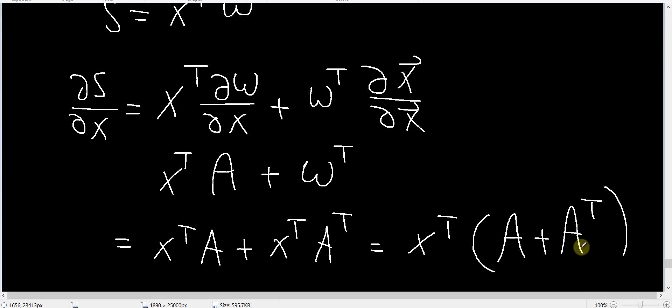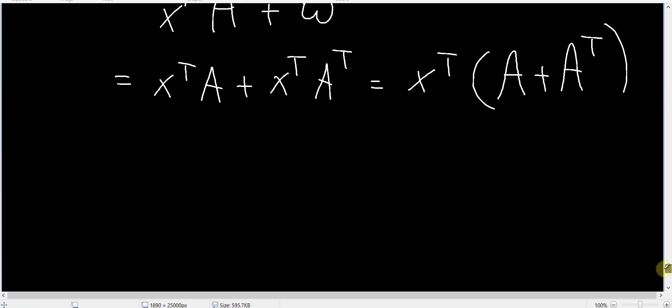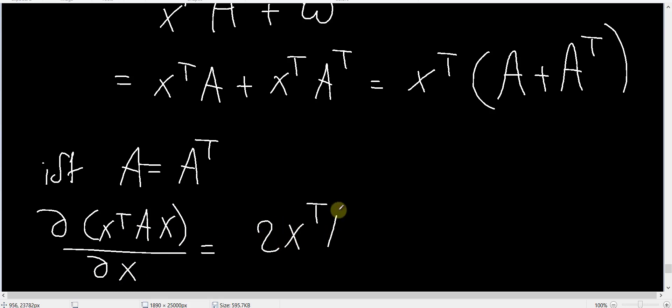This is true for any general matrix A. Now assuming that A is also symmetric, so if A is equal to A transpose, then partial X transpose AX by partial X is really equal to 2X transpose A.